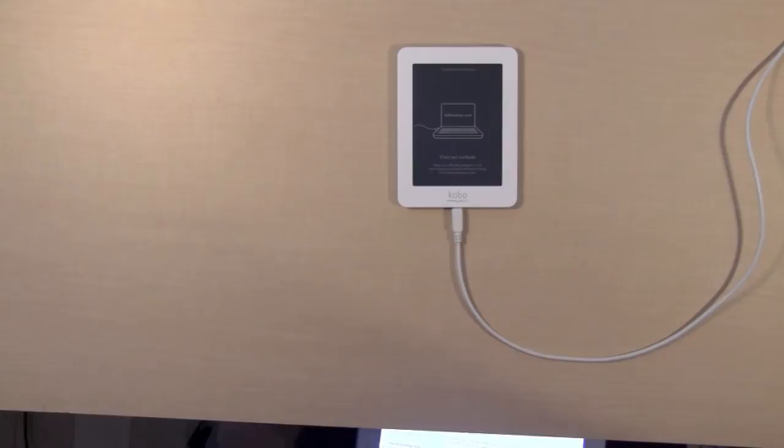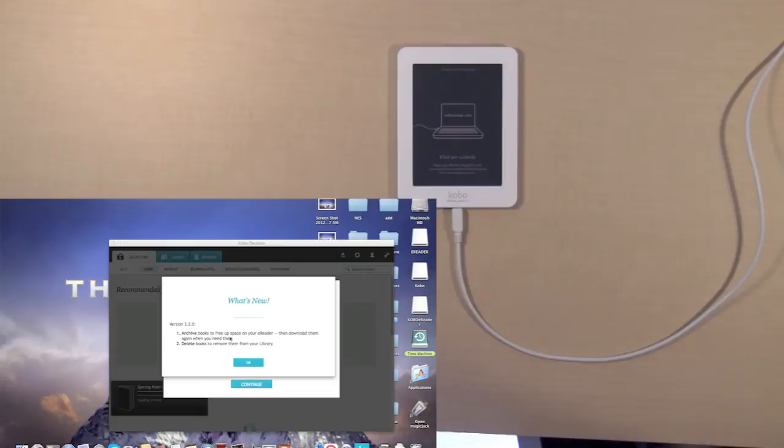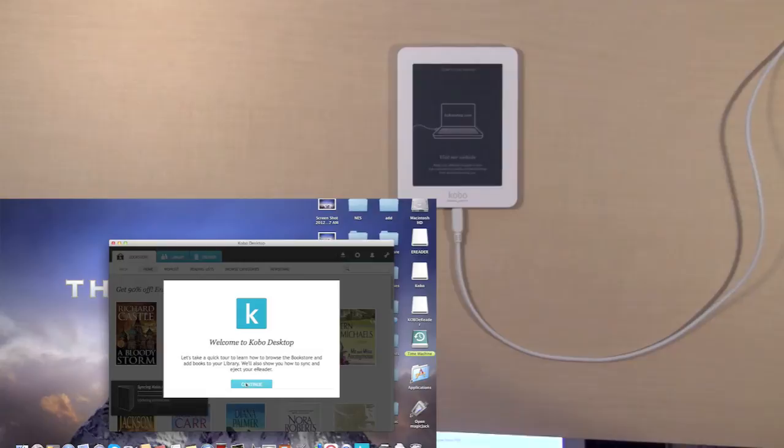You have successfully set up your e-reader to my account, which I will not show. Continue below to the Kobo desktop. Okay, what's new? Archive books to free up space on your e-reader, then download them again when you need them. Delete books or remove them from your library.